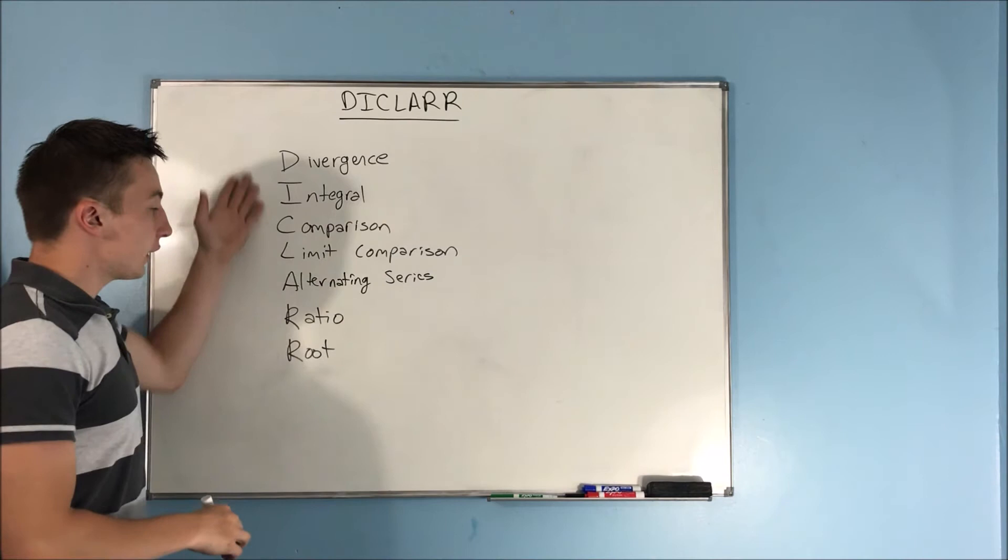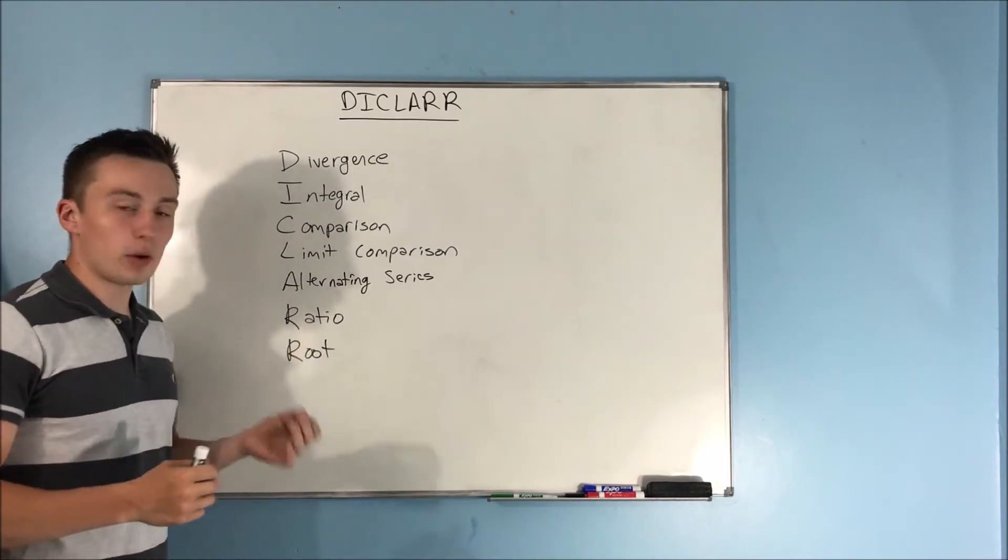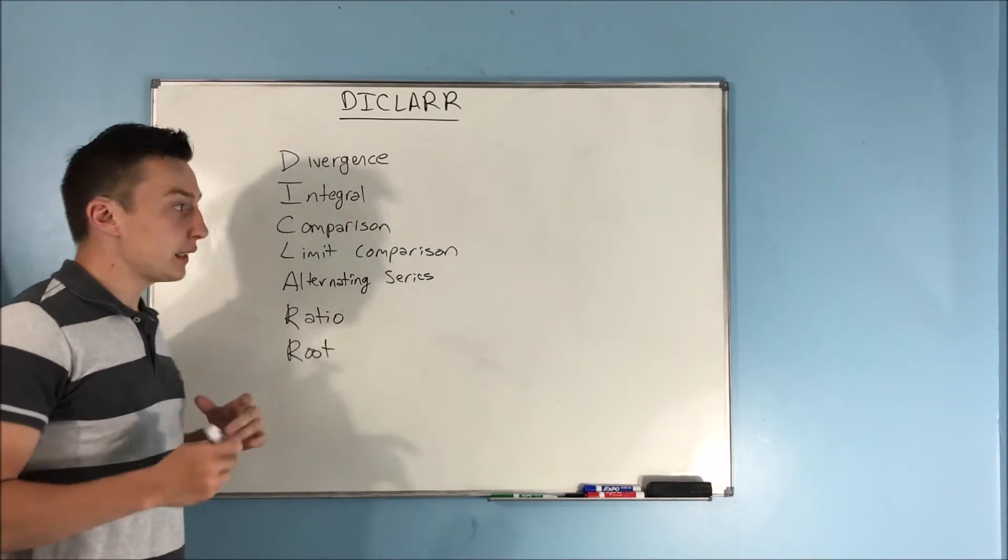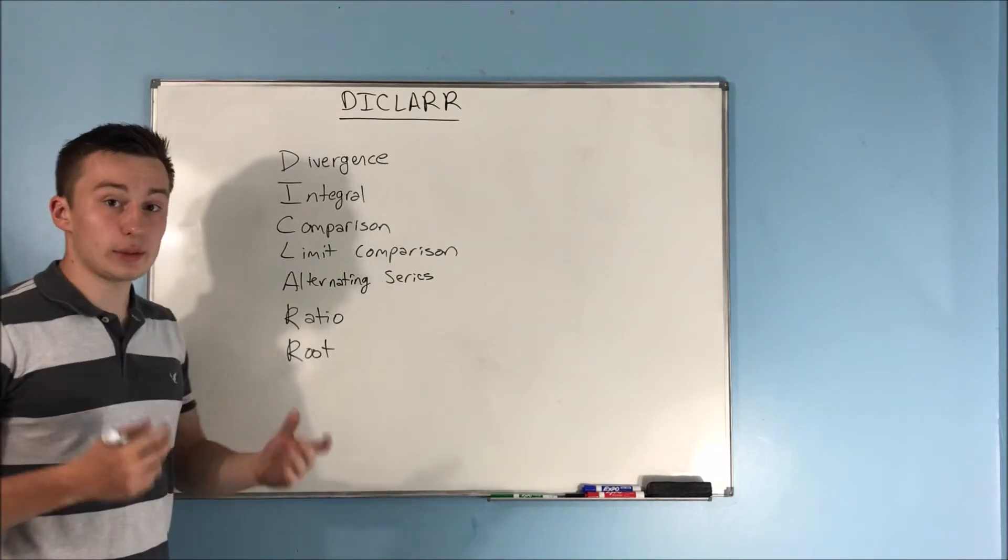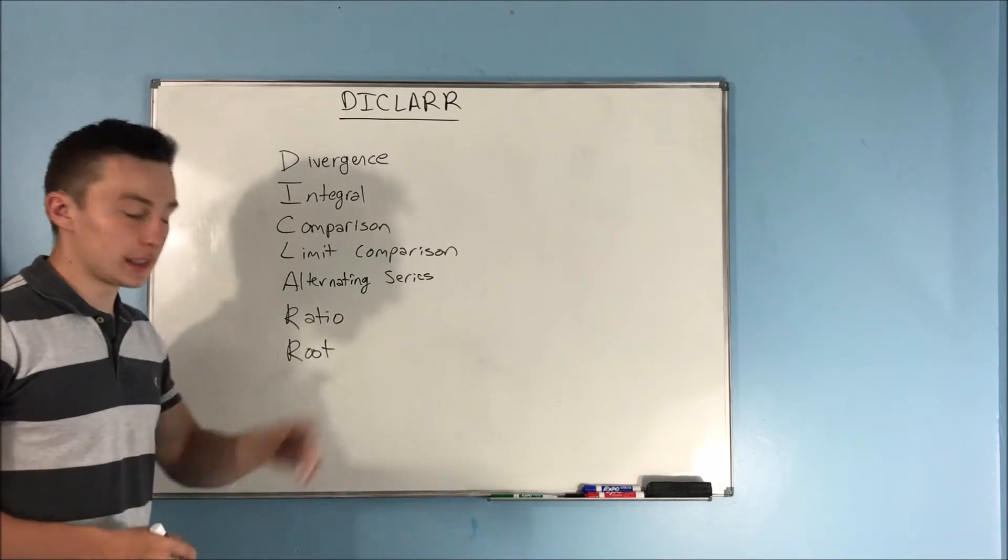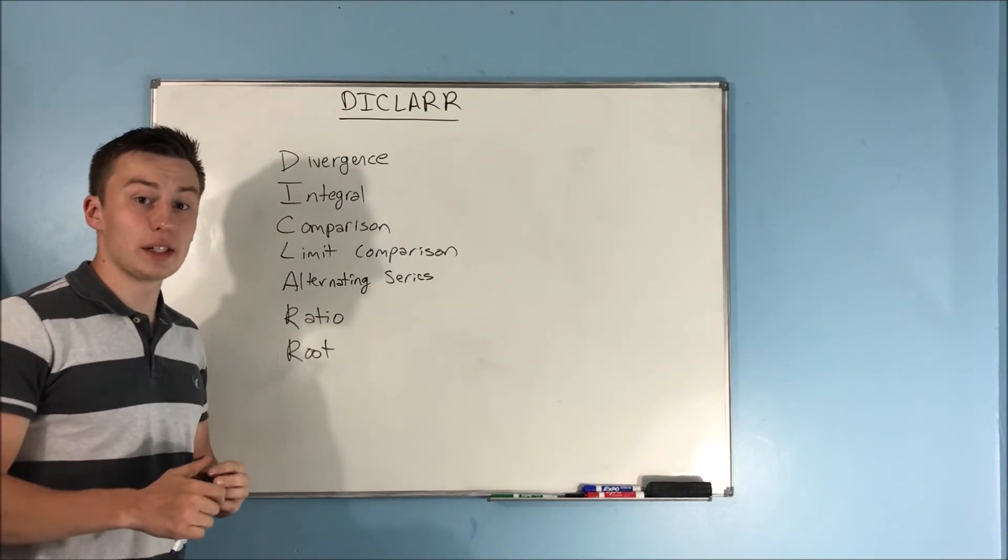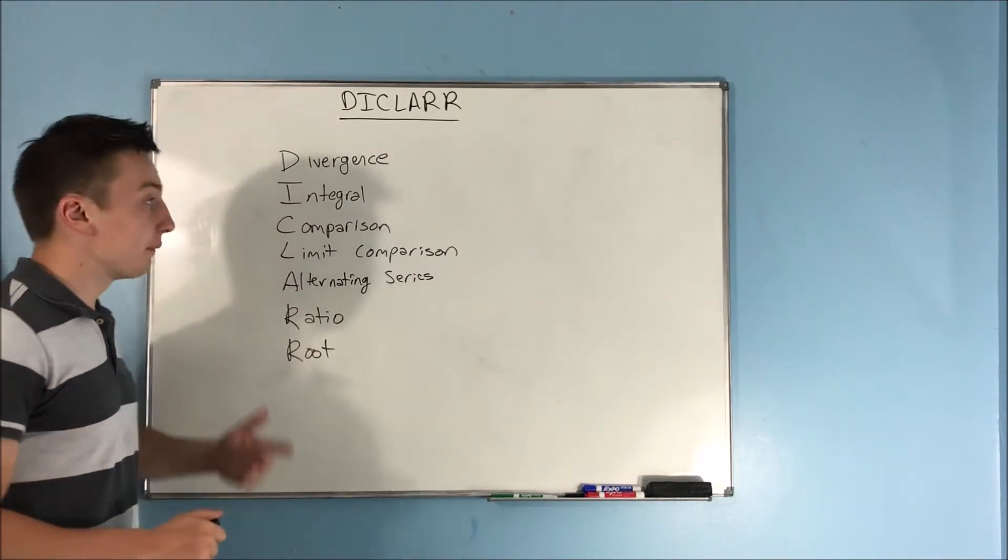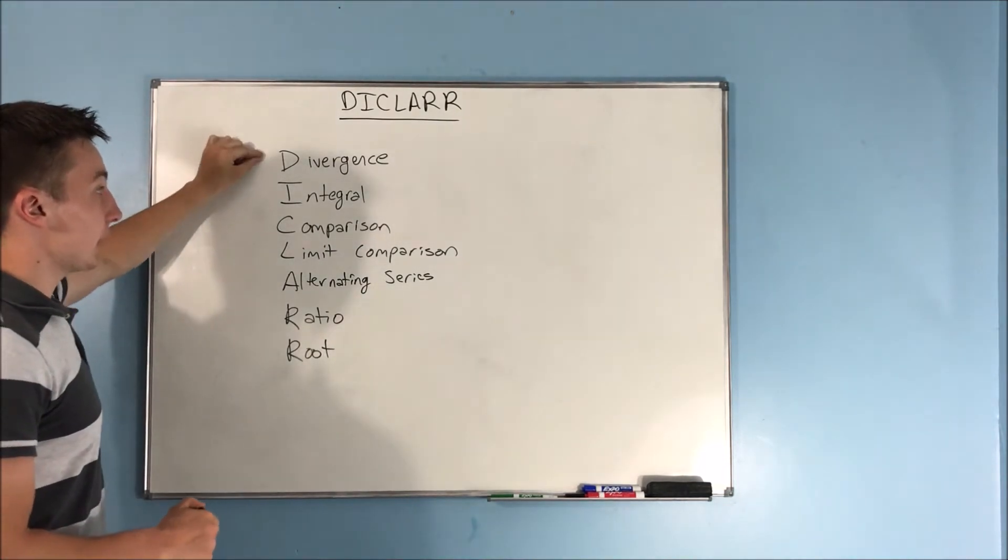Now, this list of tests wasn't just to help me memorize all the tests. This was an order that I, it was kind of like a checklist. Can I use test for divergence? That should always be the first thing that you ask when you're trying to prove if a series is convergent or divergent, and that would be the first thing that I would check.